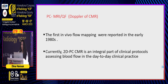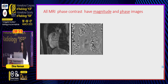The overview of 2D flow: the first in vivo flow mapping was reported in 1980. Currently, the 2D flow is an integral part of the protocols in CMR to measure blood flow in day-to-day practice. This means that in every cardiac MRI case we acquire, we have to take the 2D flows.